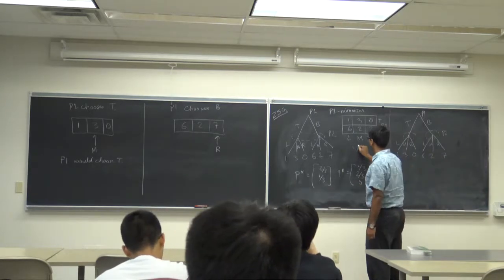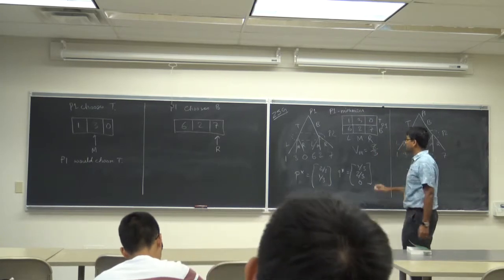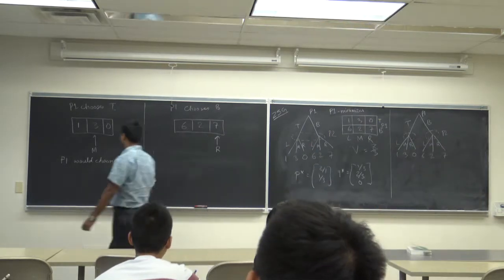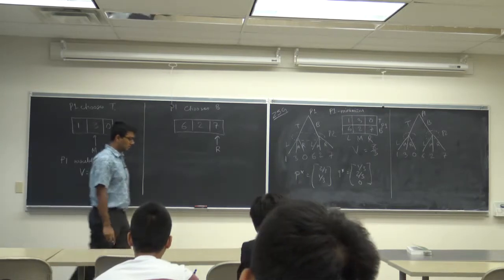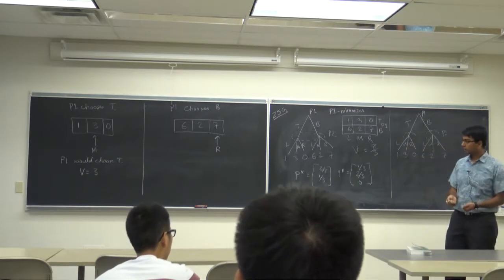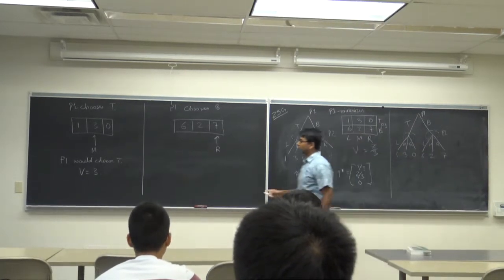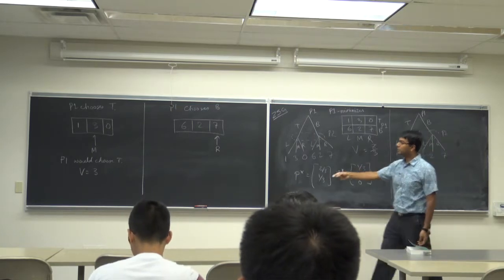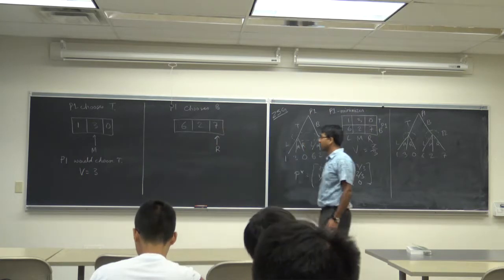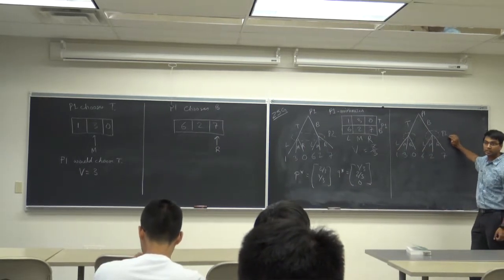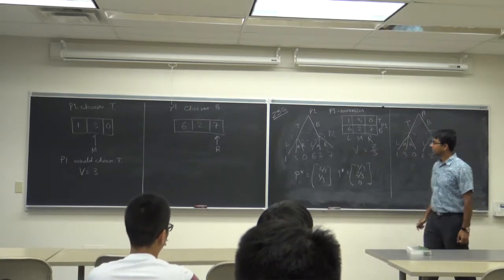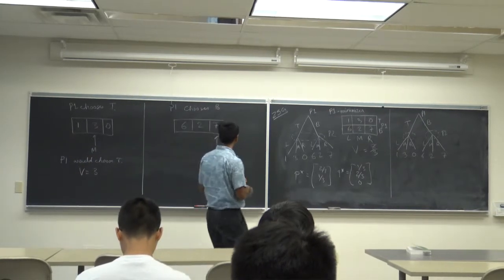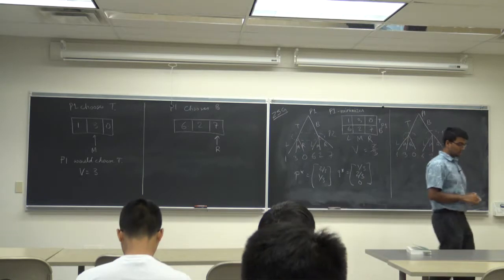In this case the value of the mixed strategy equilibrium is 8/3, whereas the value of the dynamic game is 3. So the value increased — player one loses more money and player two gains more money when player two has more information. Once you change the amount of information players have, their payoffs change.